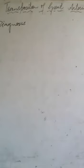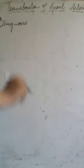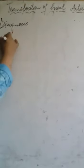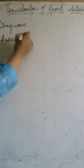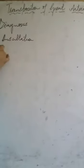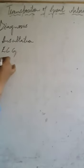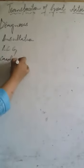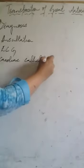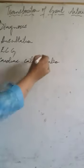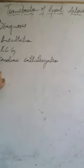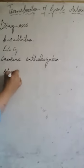The diagnosis of transposition of great arteries (TGA) is confirmed by various methods, mainly auscultation, ECG, cardiac catheterization, and blood examination.